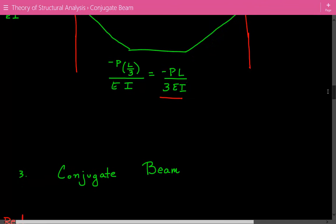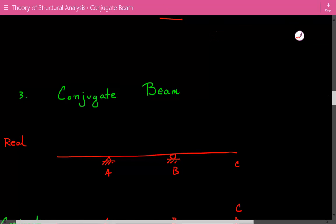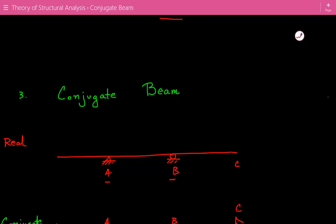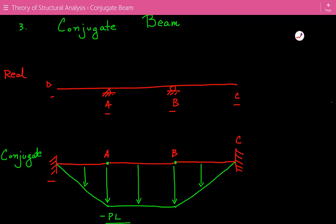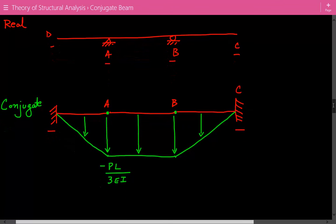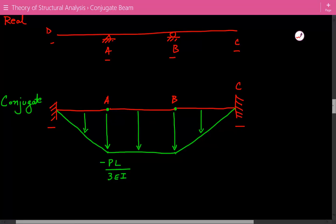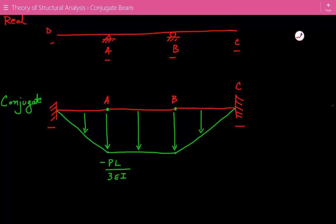Next, we construct the conjugate beam. In the real beam we have a pin at A, roller at B, free end at C, and free end at D. For the conjugate beam: free ends become fixed ends, so we have fixed ends at D and C. The internal pin and roller become internal hinges, so we have internal hinges at A and B. We then overlay the M/EI diagram on top of the conjugate beam pointing away from the beam. Since we had negative moment, it points downwards, with magnitude negative PL over 3EI.